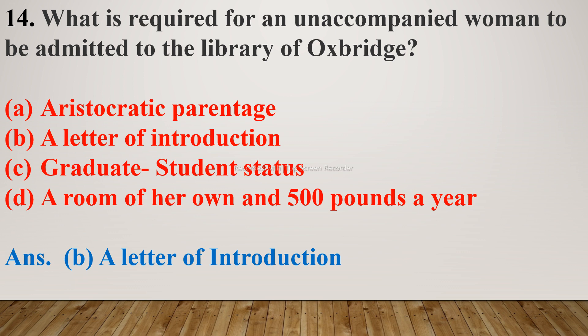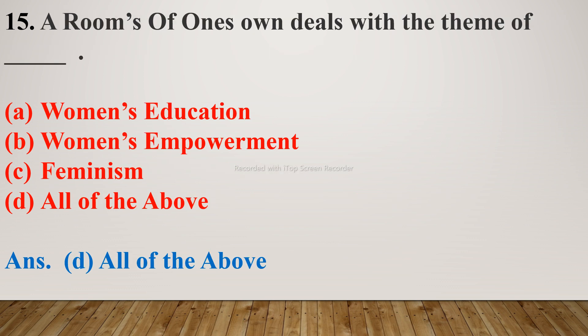Question number 14: What is required for an unaccompanied woman to be admitted to the library of Oxbridge? Options are A. Aristocratic Parentage, B. A Letter of Introduction, C. Graduate Student Status, D. A Room of Her Own and 500 pounds a year. The right answer is B. A Letter of Introduction. Question number 15: A Room of One's Own deals with the theme of — options are A. Women's Education, B. Women's Empowerment, C. Feminism, D. All of the Above. I hope you have understood all the MCQs. Thank you so much.